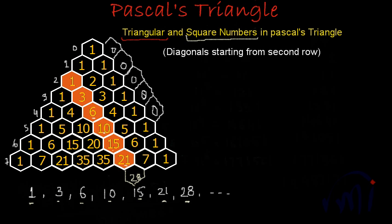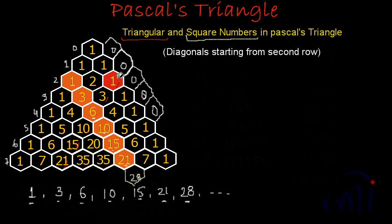Look very carefully because square numbers are found in a slightly tricky way. To find the square numbers we are again going to take the diagonal starting from row number 2. If we add the first number of the diagonal and the 0 which is outside Pascal's Triangle, we get 1. So let's write the series of square numbers.